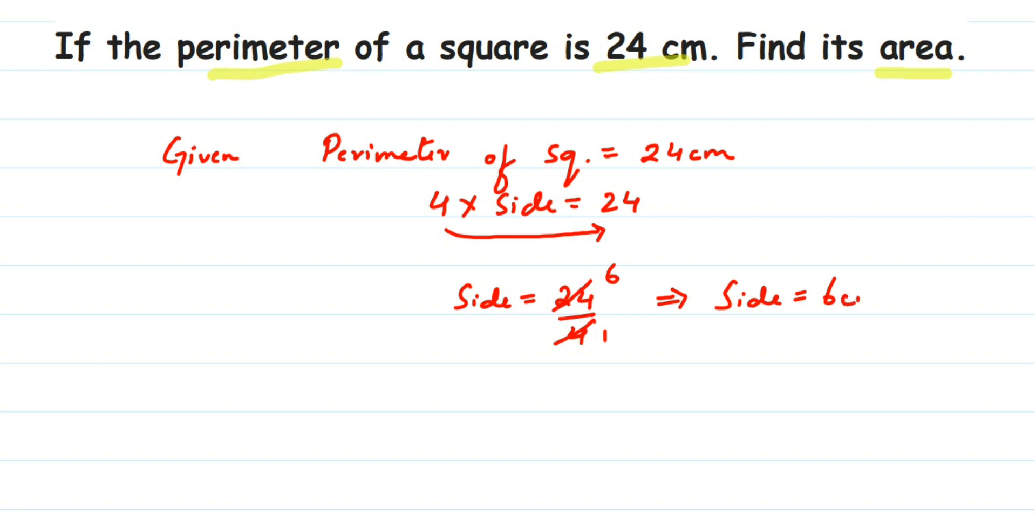Now we're going to find out the area. Area of square formula is side into side or side square. So here side square means multiplying side two times, which means 6 square. 6 square means you're multiplying 6 two times: 6 into 6 is 36. So we're going to get the answer 36 centimeter square.